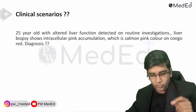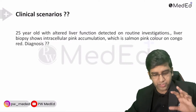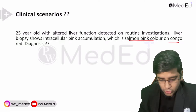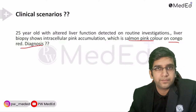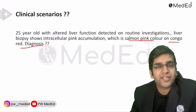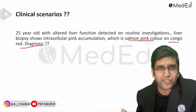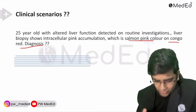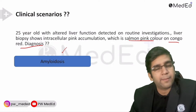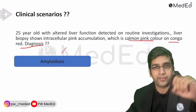Next case: 25-year-old, altered liver function on routine investigation. Liver shows intracellular pink accumulation, which is salmon pink on Congo red. Diagnosis: amyloidosis. Congo red positive means it has to be amyloidosis. Amyloid can cause hepatomegaly, splenomegaly, and can be deposited in the kidney and all over the body.